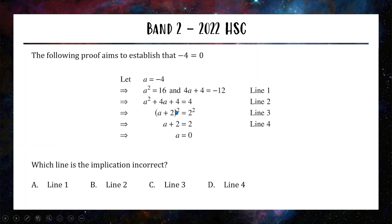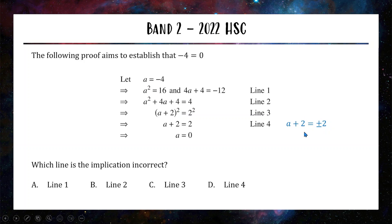Think about how going from line 3 to line 4 is a little bit dodgy. What we're doing is taking the square root of both sides, but hopefully you learned in year 8 or 9 that when you take the square root in an equation you don't just take the positive answer — you also take the negative answer. So if (a+2) squared is equal to 4, it means that a+2 could be 2 or it could be negative 2. For that reason, line 4 is incorrect and the rest are all correct — but a lot of people got that right, which is why it's only a band 2 question.